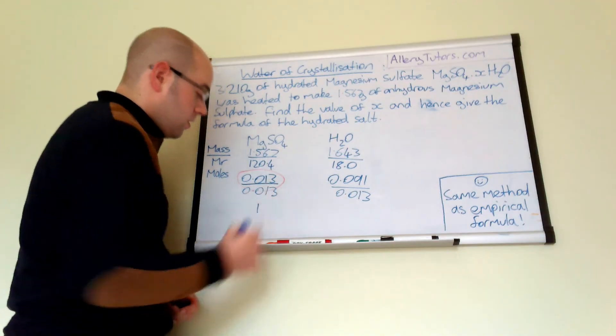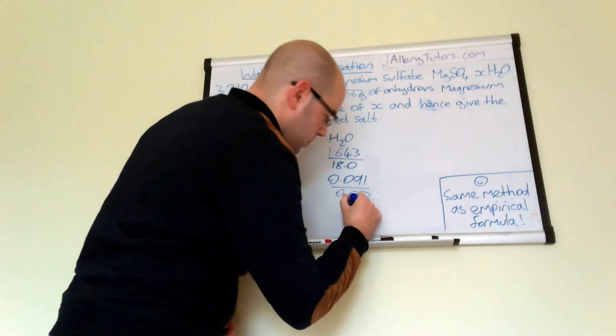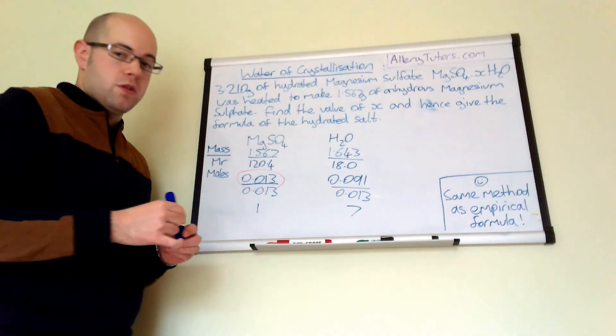That should give us 1. And this one should give us, if you put it in your calculator, should give us a number of 7.